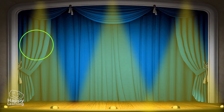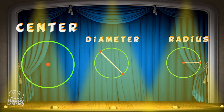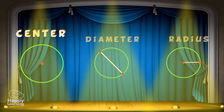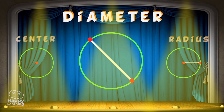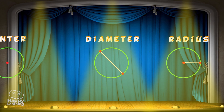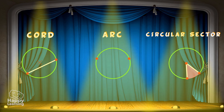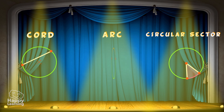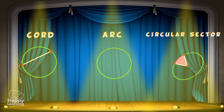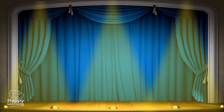Let's start with the first three most important ones: the center, diameter, and radius. And now the next three: cord, arc, and circular sector, which is the one that looks like cheese.